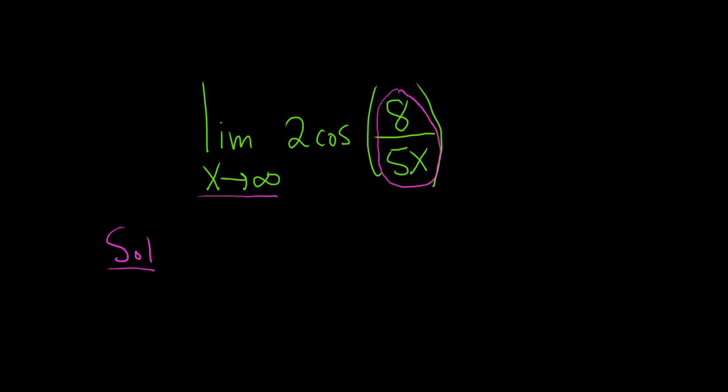So 8 over 5x. The bigger that x gets, the bigger that the bottom gets. And whenever you have a fraction and the bottom gets really big, the fraction gets smaller and smaller. So this piece here is approaching 0.